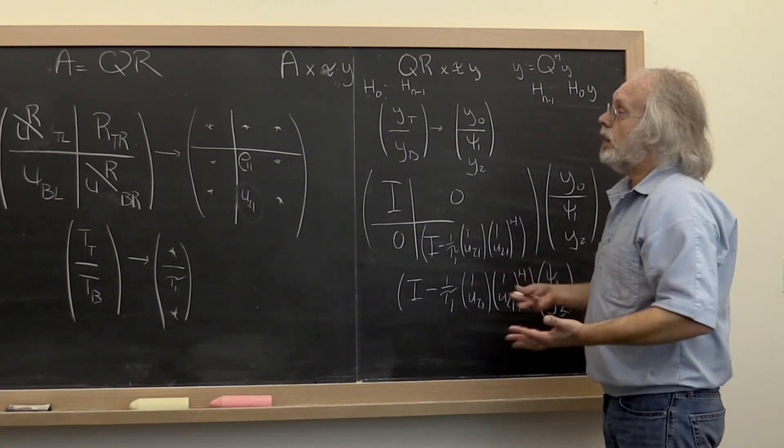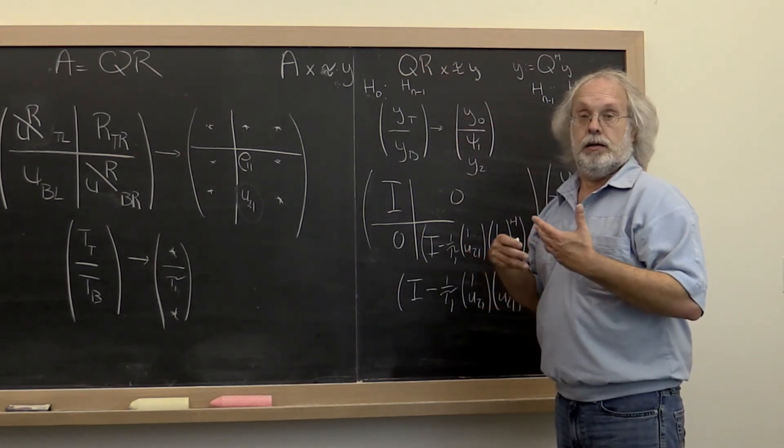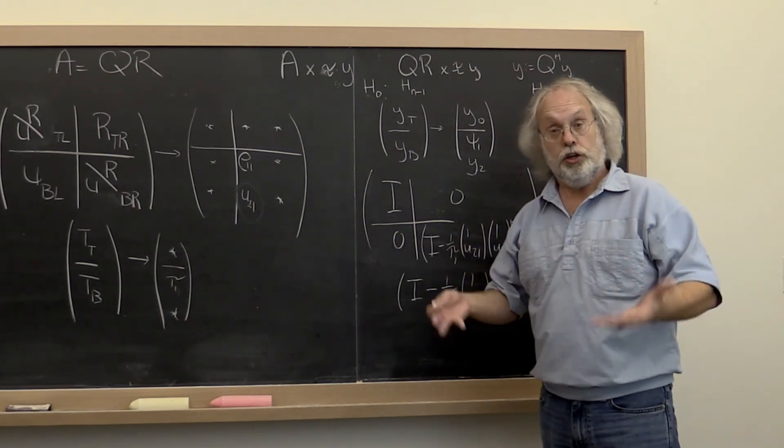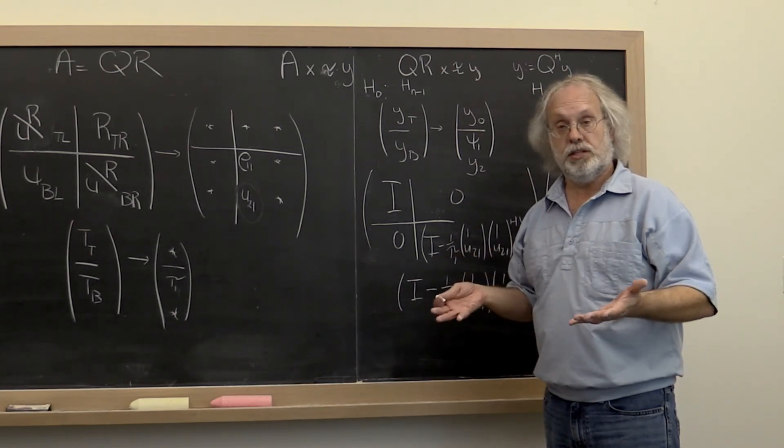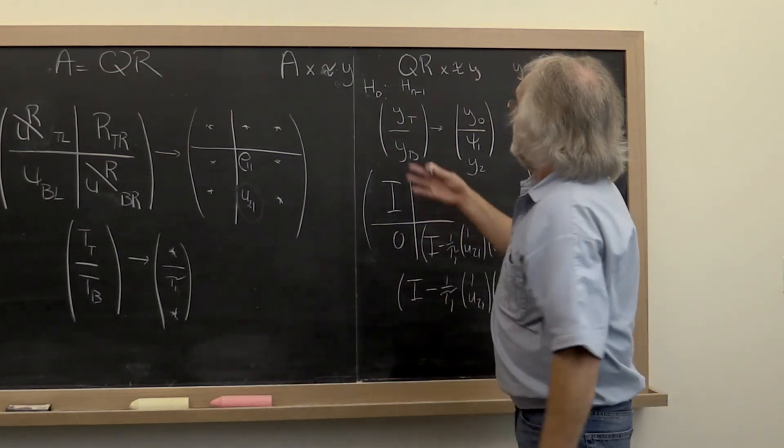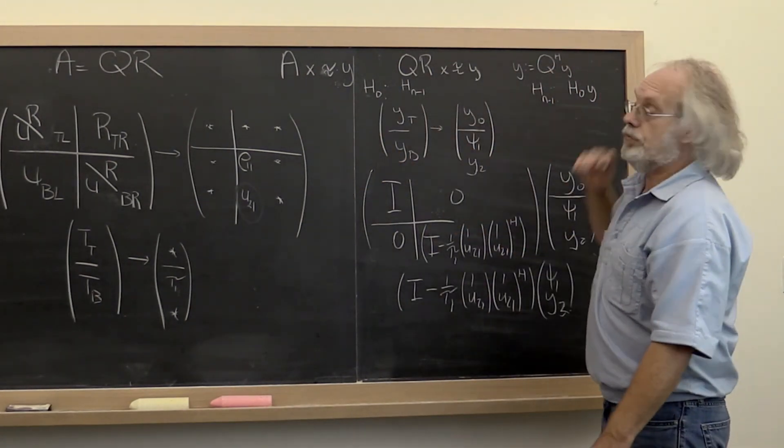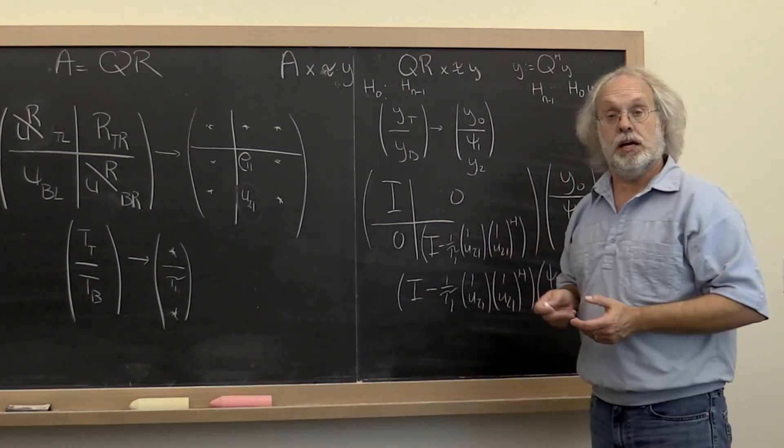And this is why often we don't ever explicitly compute Q at all. Computing Q is very expensive. It's an order m times n squared computation. What we can do instead is apply the Householder transformations to the vector Y and that gives the same result.